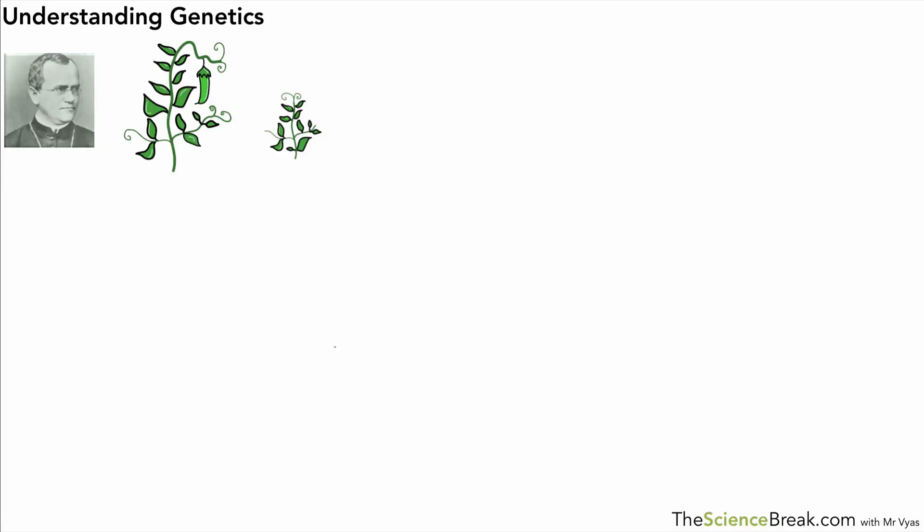Hello, we are going to take a look at how our understanding of genetics has developed over time. One of the key players in this development of our understanding was a monk. He was an Austrian monk, I believe, and his name was Gregor Mendel. He did a lot of work to do with inheritance.